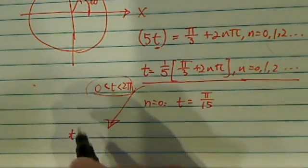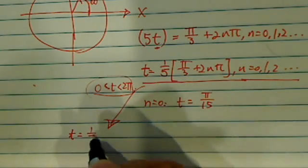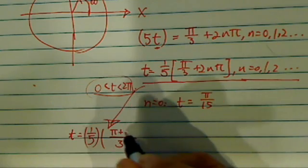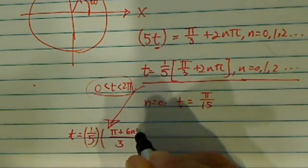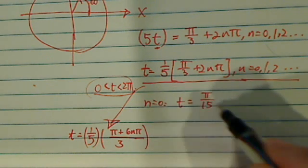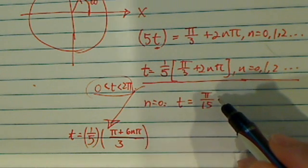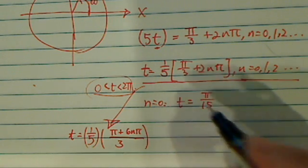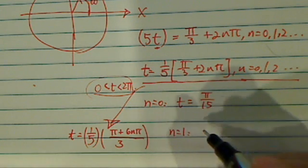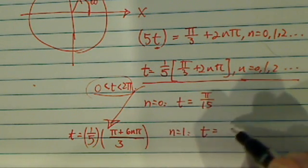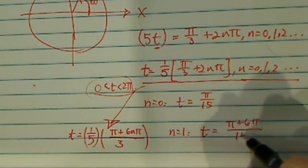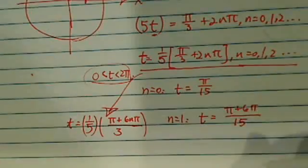So t is equal to 1 over 5 times pi over 3 plus 2n pi. Okay, so when n equal to 0, we have t equal to pi over 15. When n equal to 1, we have t is equal to pi plus 6 pi over 15. Okay, that's still less than 2 pi.